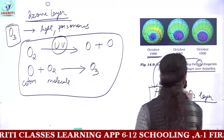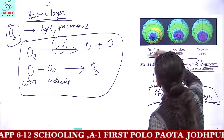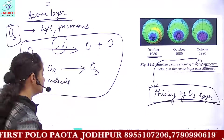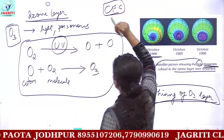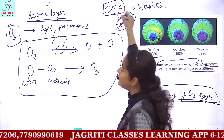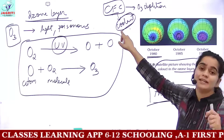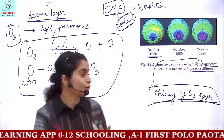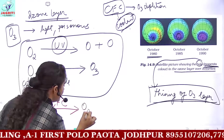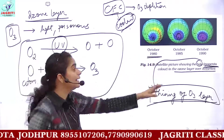Over Antarctica, from the 1980s, a hole has been observed in the ozone layer — which is actually a thinning of the ozone layer. The ozone hole was first very small, then it enlarged and became very large. The cause of ozone depletion is chemicals called CFCs — chlorofluorocarbons — which are present in the coolant systems of refrigerators and ACs. When CFCs are released and rise into the atmosphere, they break ozone back into O2 and O, depleting the ozone layer.